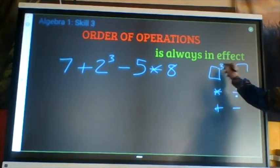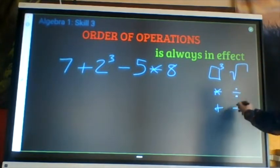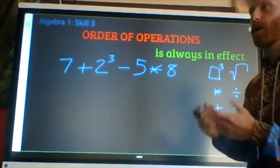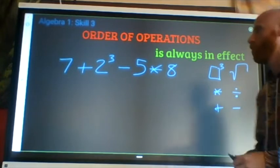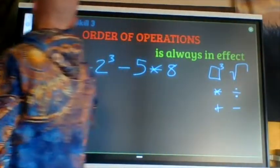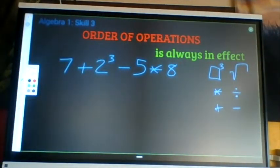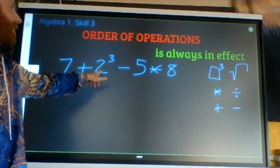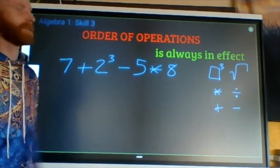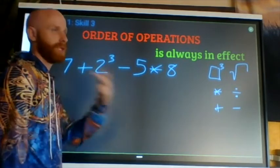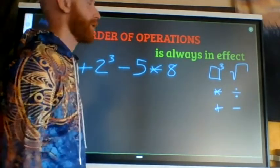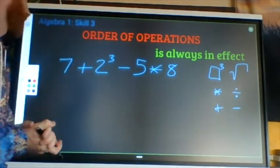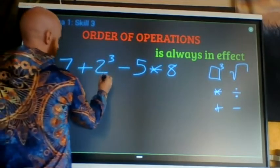So order of operations says I do these things first, then these things, then these things. And at each level, I work from left to right. So we've got a numerical expression right here. And the most powerful operation right now is two to the third power. So that means two times two times two is what I do with a calculator or two carat three. And you're going to come out with eight when you do that operation.